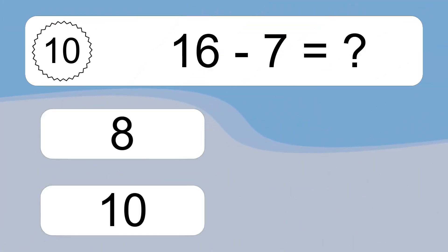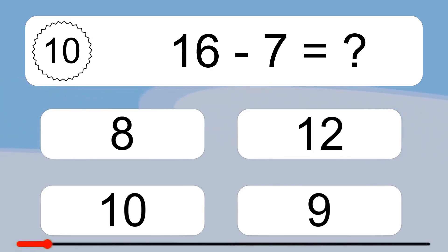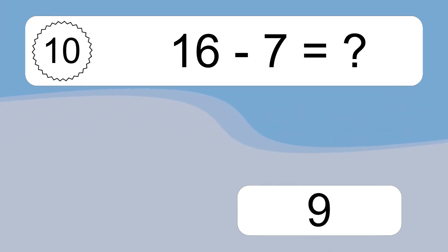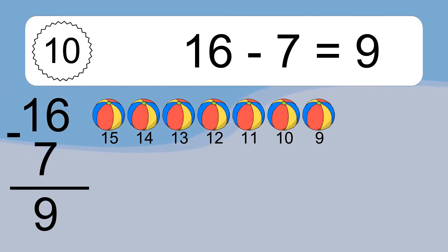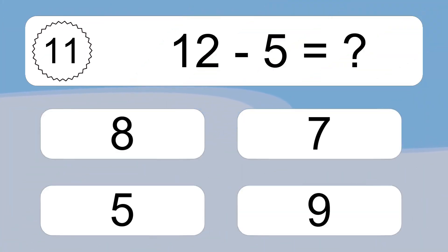16 minus 7 equals what? 16 minus 7 equals 9. Let's count it: 15, 14, 13, 12, 11, 10, 9.